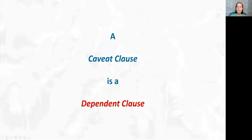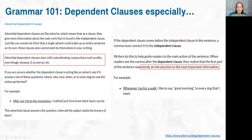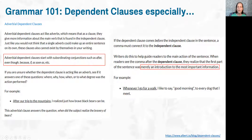A caveat clause takes us back to Grammar 101 — it's a dependent clause. In this review, as I often do research on the topic, I discovered that there are three kinds of dependent clauses. The one that applies to caveat clauses is adverbial dependent clauses. These start with words like even though, because, if, and also in the world of research and evaluation, they start with despite or while —